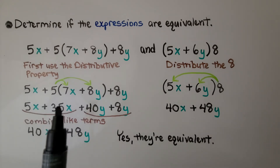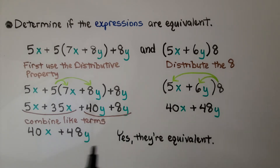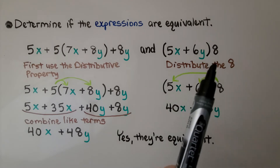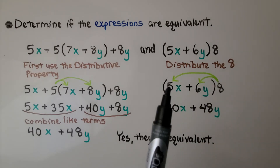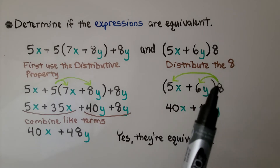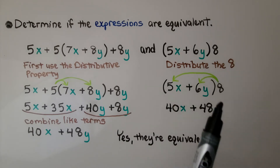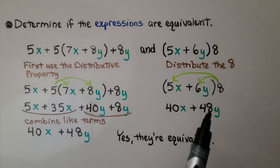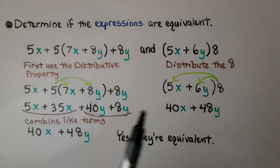Now we have 5x plus 35x plus 40y plus 8y. We combine the like terms: 5x plus 35x is 40x, and 40y plus 8y is 48y. For the second expression, we distribute the 8: 8 times 5x is 40x, and 8 times 6y is 48y. We can see, yes, they are equivalent. We didn't need to know the value for x and y — we just simplified them and ended up with the same expressions.